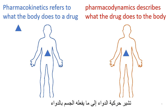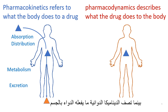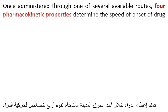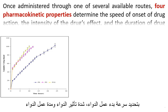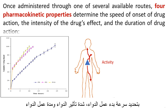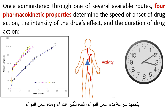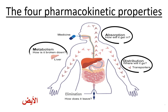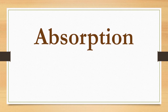Pharmacokinetics refers to what the body does to a drug, whereas pharmacodynamics describes what the drug does to the body. Once administered through one of several available routes, four pharmacokinetic properties determine the speed of onset of drug action, the intensity of the drug's effect, and the duration of drug action: absorption, distribution, metabolism, and elimination.